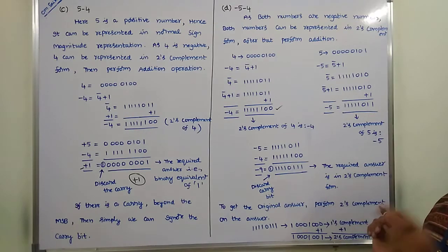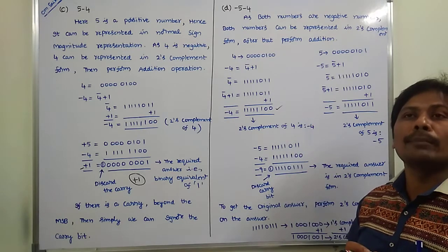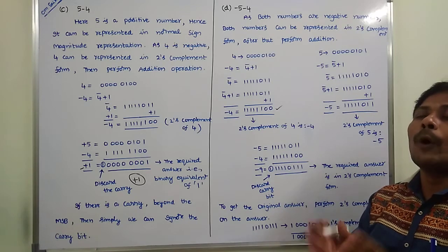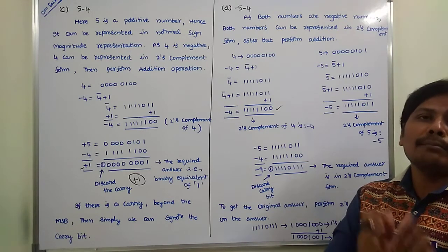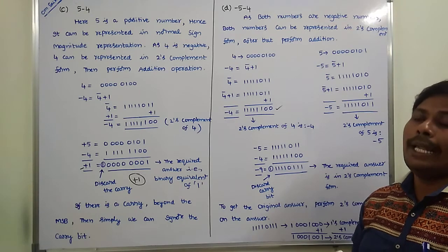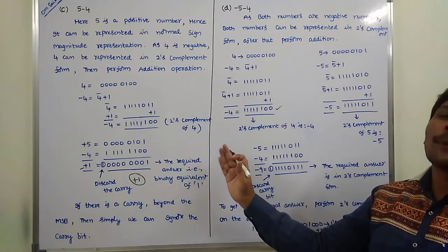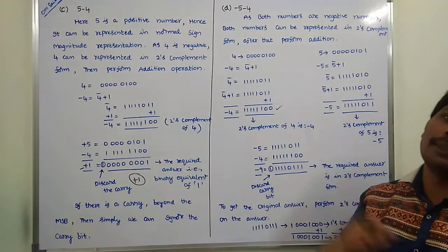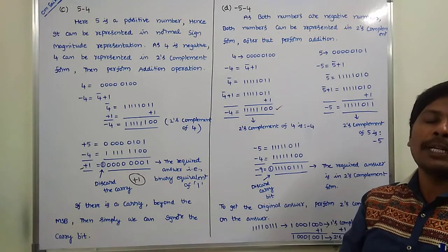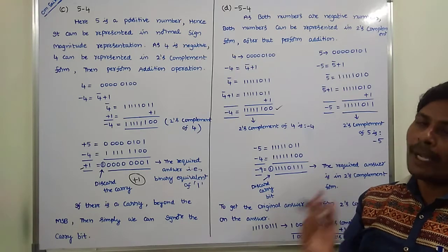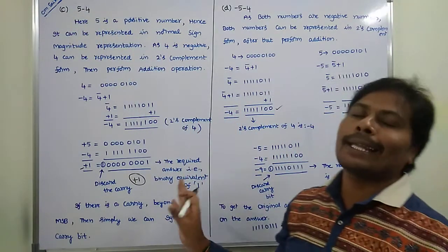In this way, we perform the binary arithmetic operation on the given decimal numbers — whether both numbers are positive, both are negative, one is positive and another is negative, or one is negative and another is positive. The same procedure can be applied to any type of number, such as plus 35 minus 24, plus 24 minus 35, minus 24 minus 35, or plus 34 minus 25. We can take any numbers; the same procedure applies.